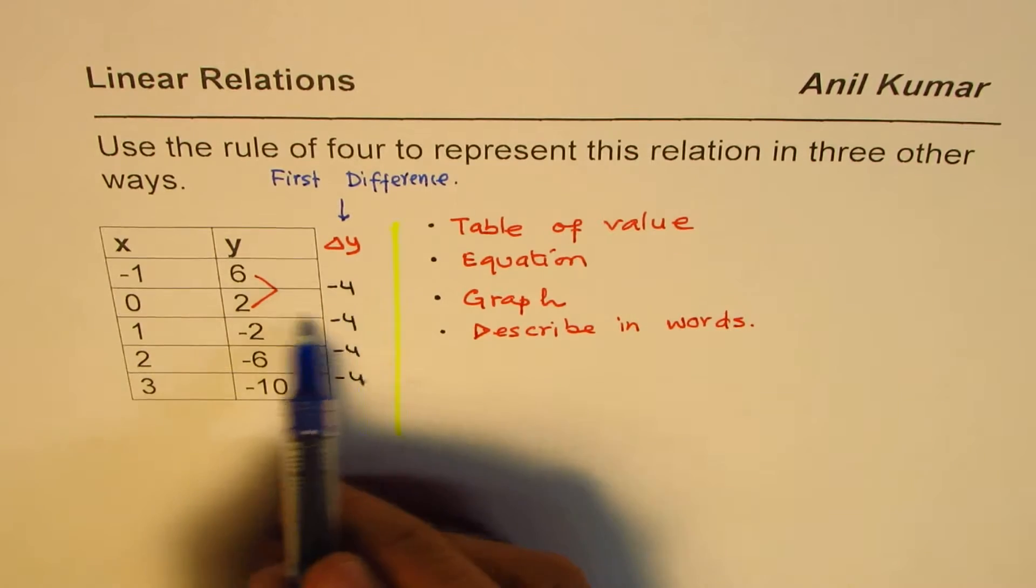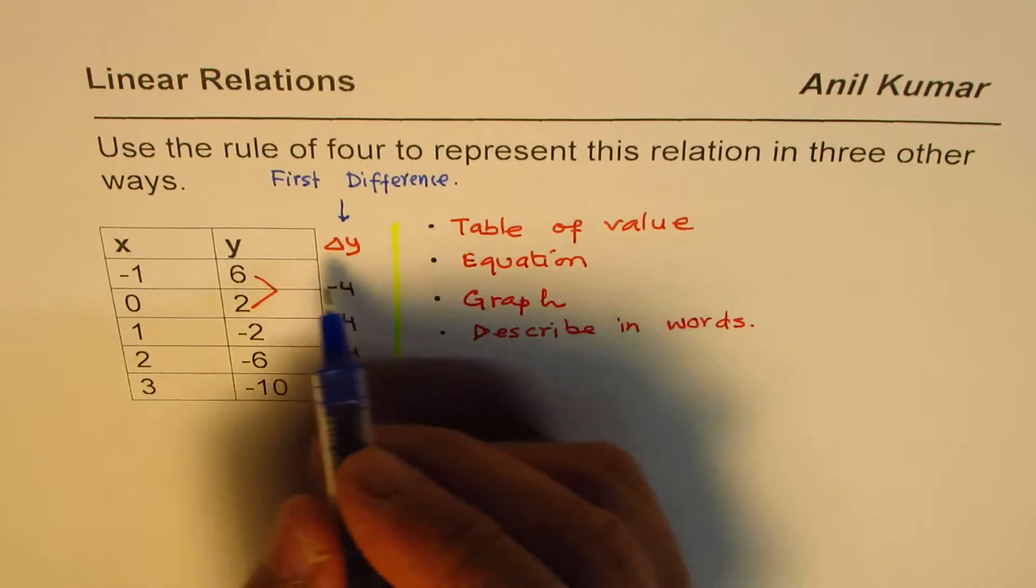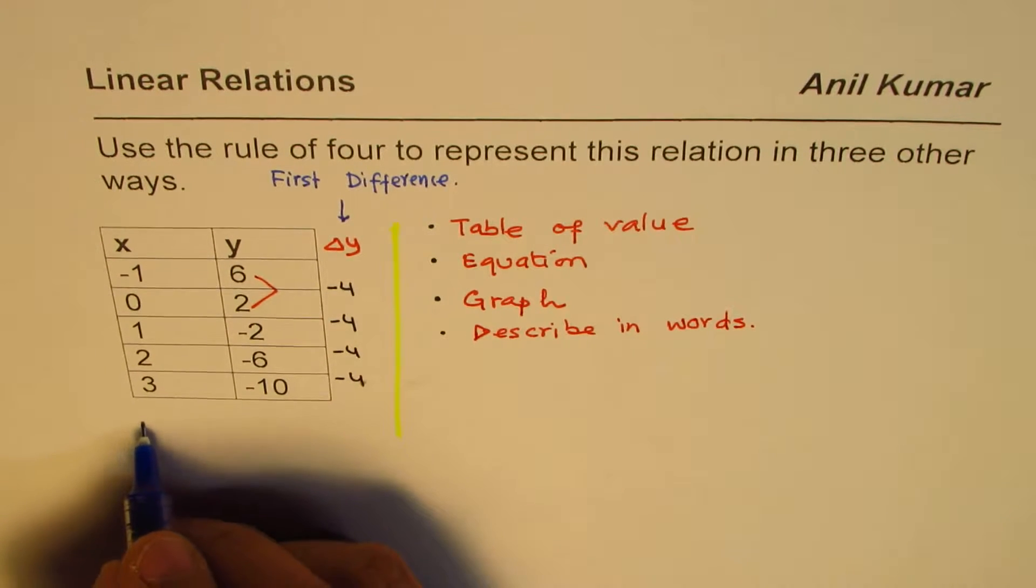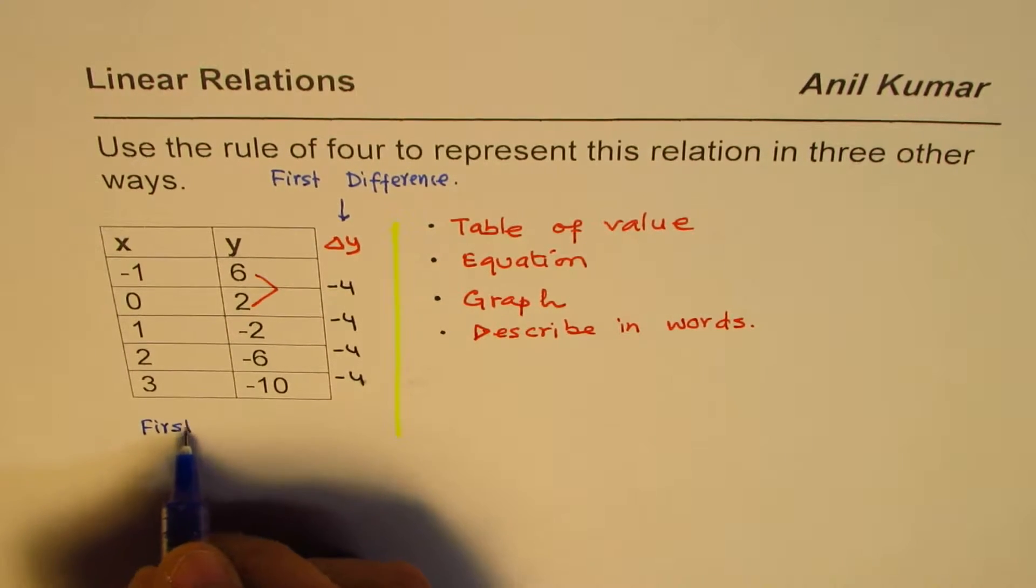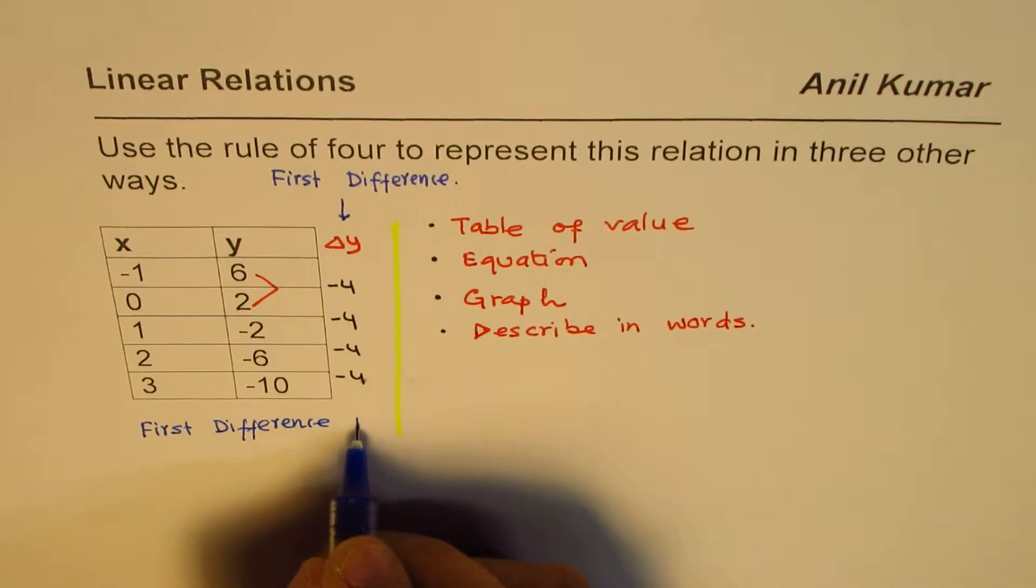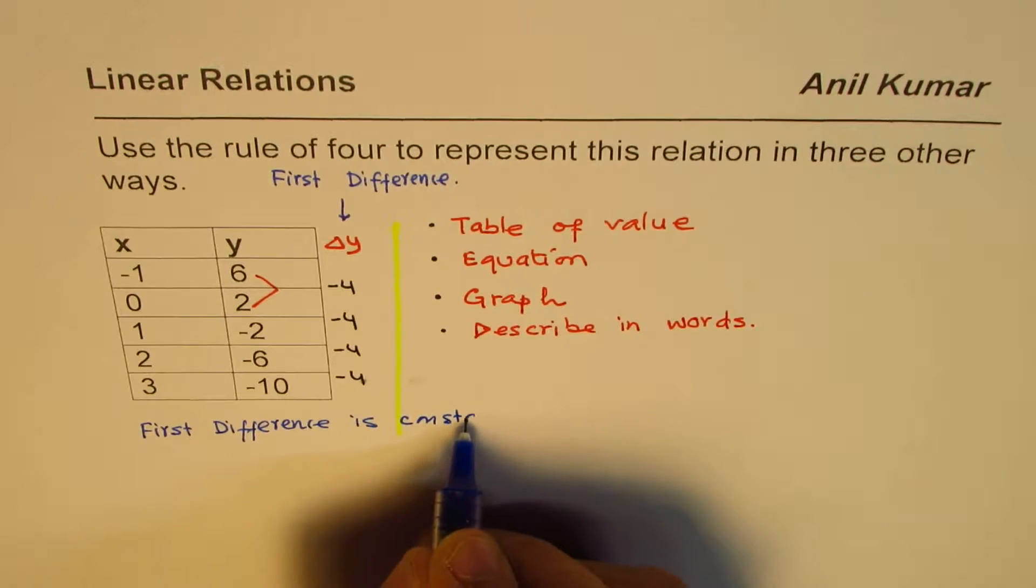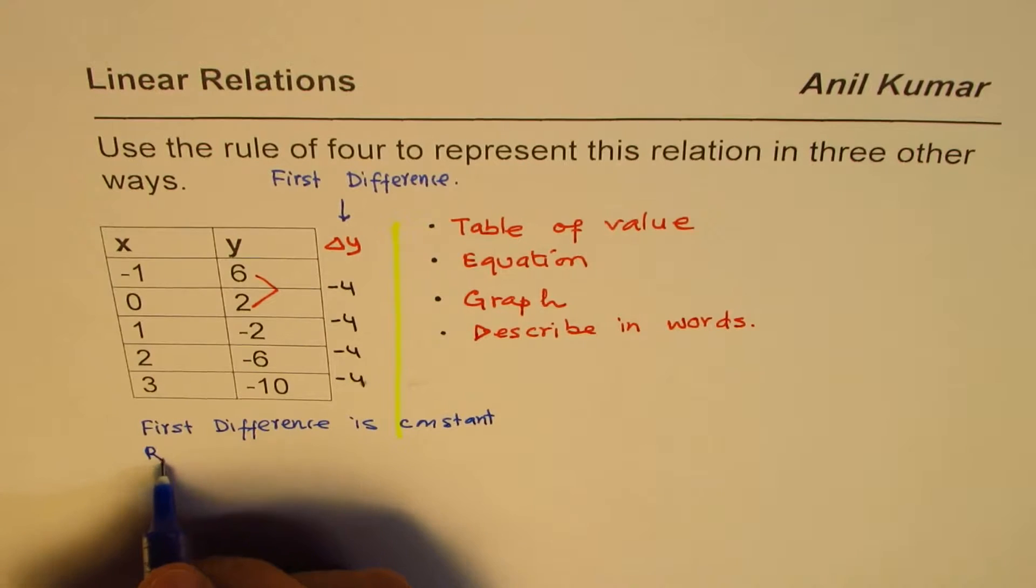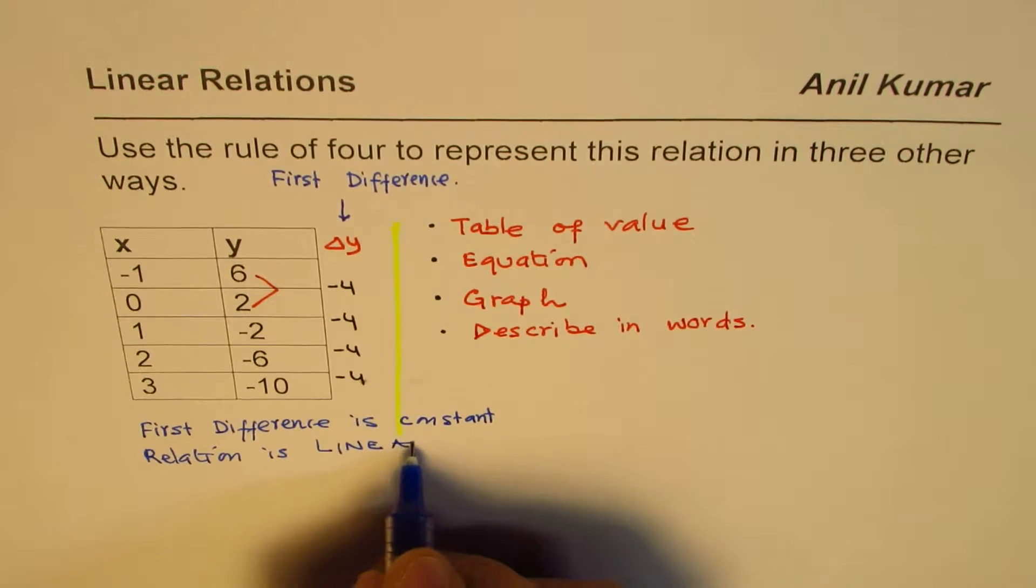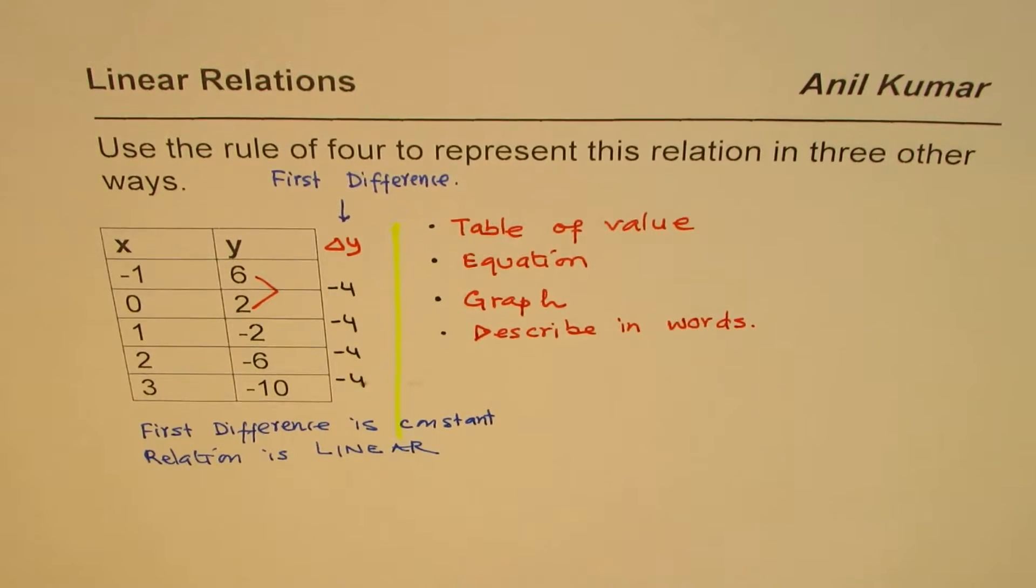So, here, we got these values by finding difference of consecutive y values. So, first difference. So, what we observe here is that the first difference is constant. And that means the relation is linear. That means relation is linear. Now, once we know it is linear, we can find the equation of this relation from the first difference.